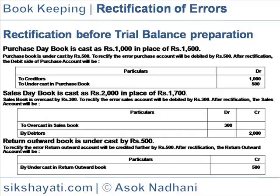Sales day book is cast as Rs.2000 in place of Rs.1700. The sales book is overcast by Rs.300. To rectify the error, the sales account will be debited by Rs.300. After rectification, the sales account will be as follows.